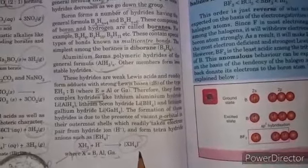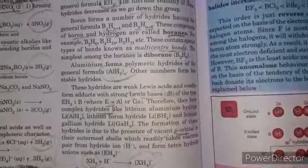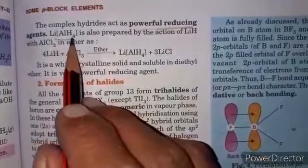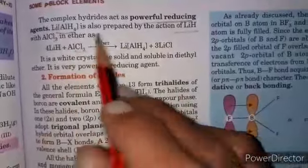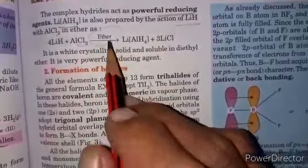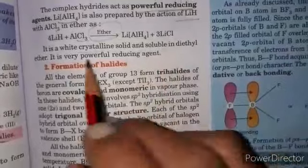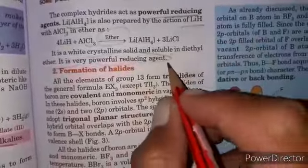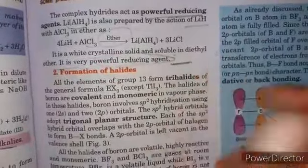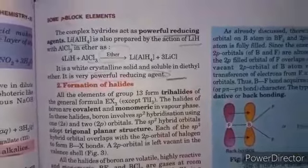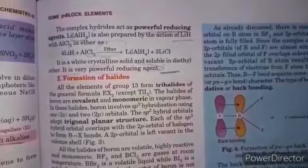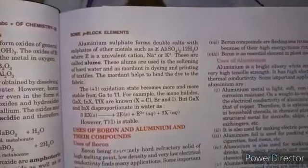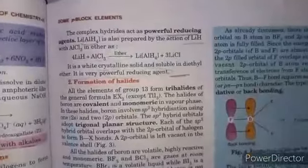These complex hydrides act as powerful reducing agents. For example, lithium aluminum hydride reacts in the presence of ether solvent. It's a white crystalline solid, soluble in diethyl ether, and acts as a powerful reducing agent. If you have any doubt up to formation of hydride topic you can contact me. There is only one topic left of Group 13, that is formation of halides and their properties. Uses you can do yourself. We'll discuss this in the next video. Thank you.